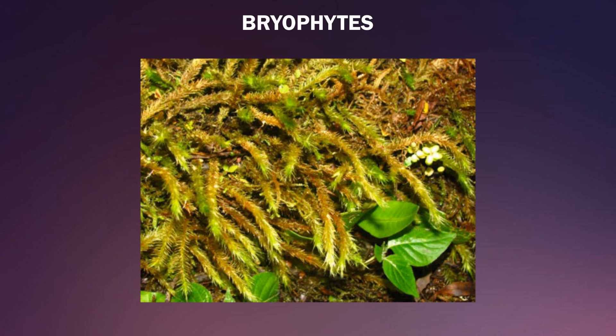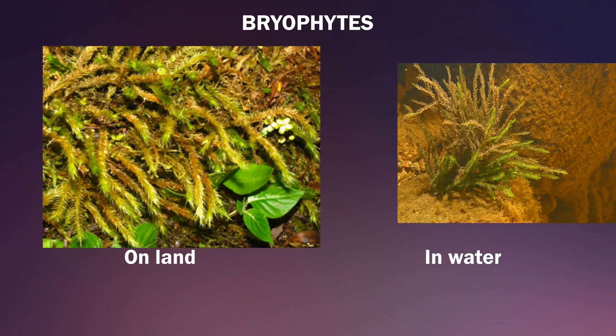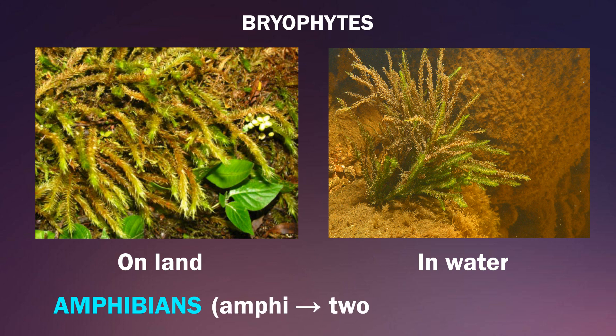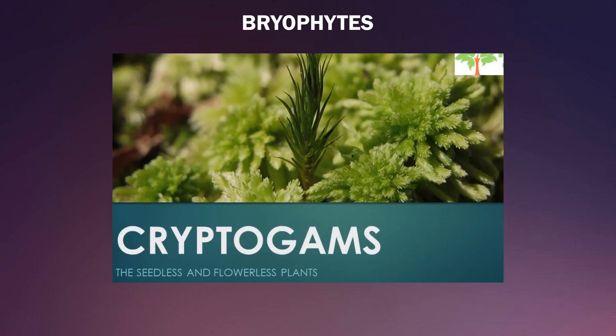Bryophytes are the primitive and simplest group of plants. They are found both in water and on land, thus called amphibians. Amphi means two, which stands for both land and water. They are cryptogams because they do not have any seed and thus have a hidden reproduction method. Crypto means hidden.